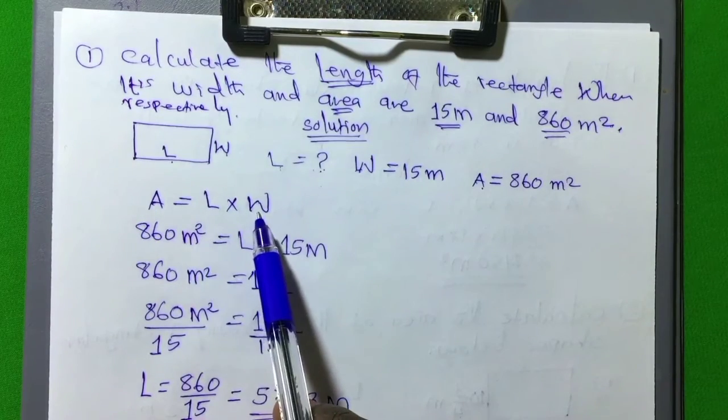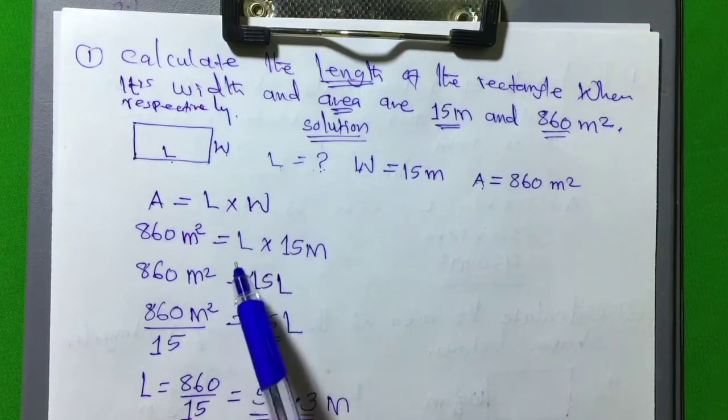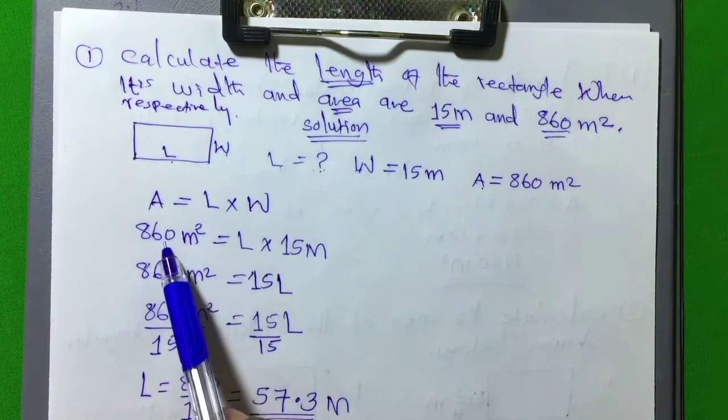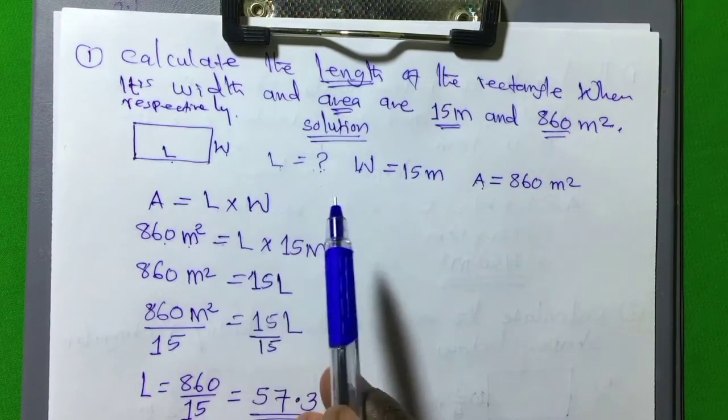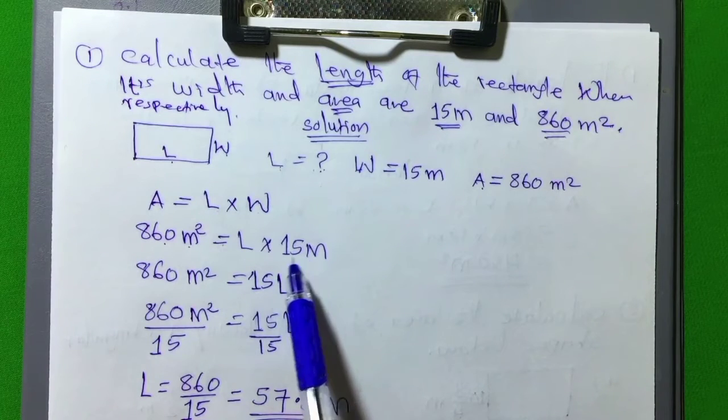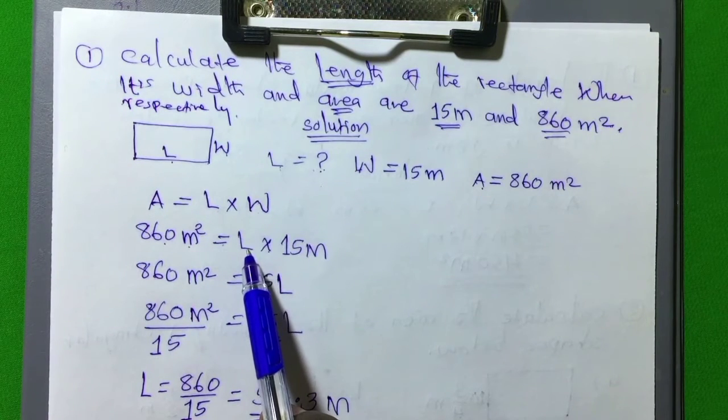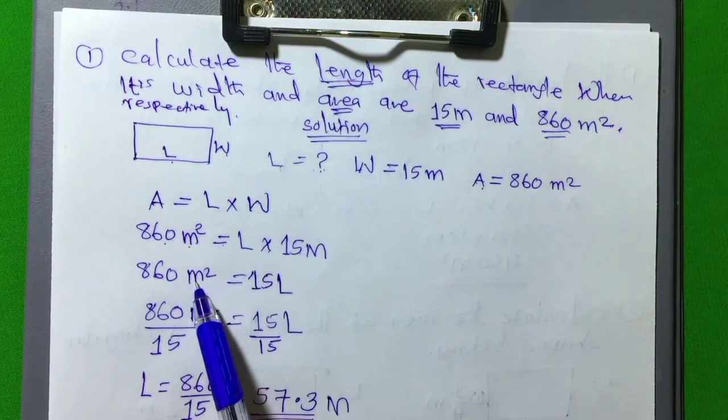Let's now substitute this into this equation. Let's say area is equal to L times W. L is the value of length and W is the width. Already A we have which is 860 meter squared which is equal to L which we don't know multiplied by the value of W which is 15 meter. Then L times W will be 15L.